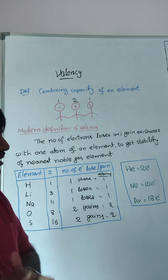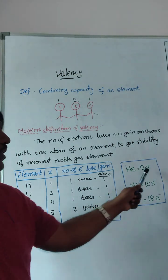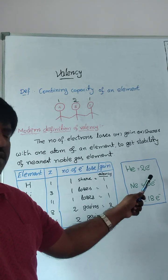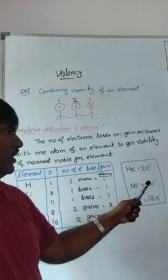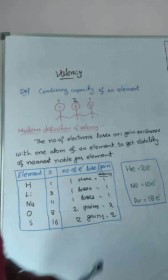If you take within 20 elements, what are the noble gases? Helium, Neon, Argon. Helium, atomic number is two. It has two electrons. Neon 10, 10 electrons. Argon 18, 18 electrons.